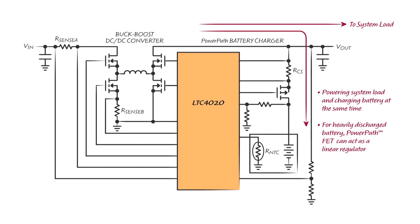For a heavily discharged battery, the controller can automatically configure the power pass FET as a linear regulator, allowing the buck-boost converter output to rise above the battery voltage while still providing charge current into the battery.